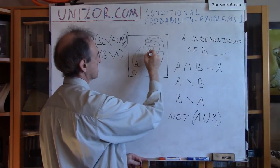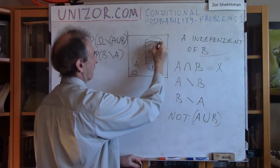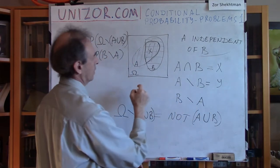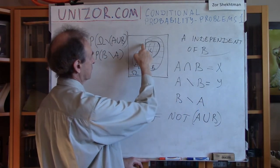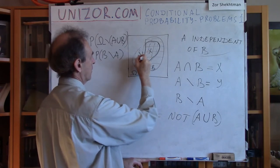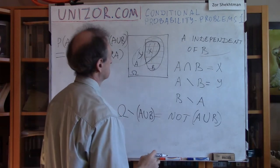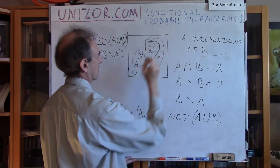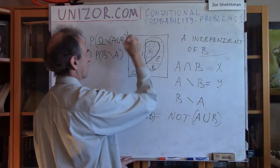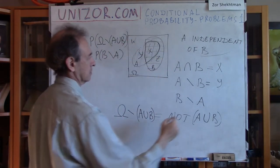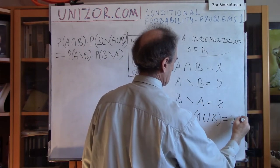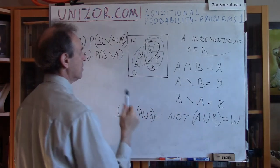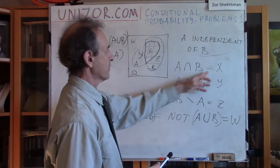This inside area is X. Then Y is A without B — that part. B without A would be Z. And everything outside of both would be W. I would prefer to deal with X, Y, Z, and W instead of A and B because they do not have any intersection.